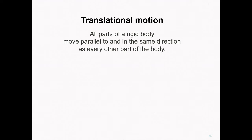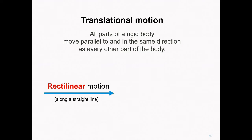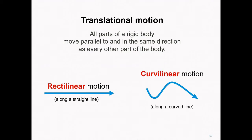A translational motion is said to occur if all parts of a rigid body move parallel to and in the same direction as every other part of the body. Translational motions can be rectilinear or curvilinear. Rectilinear motion refers to motion along a straight line, and curvilinear motion refers to motion along a curved line.